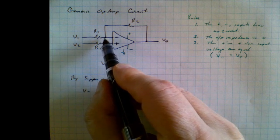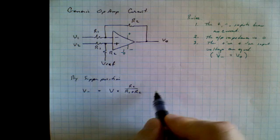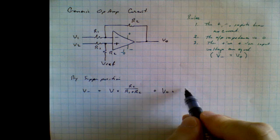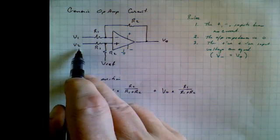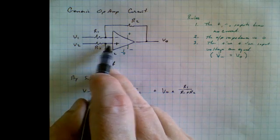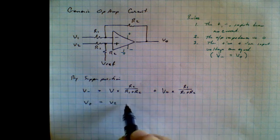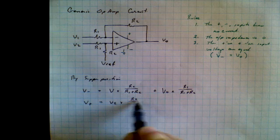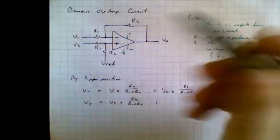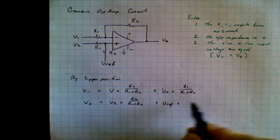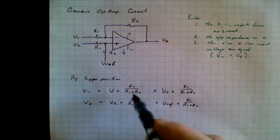But of course there is a contribution to the voltage at this point from this source. So now we'll put this source to the ground, V1, and we'll look at the contribution from VO. Plus VO times, and this time it will be R1 over R1 plus R2. And we'll do the same thing over here. We'll find the voltage at the non-inverting input, the contribution from V2. So that will be V2 times R2 over R1 plus R2 plus contribution from Vref. And then V2 goes to zero. So Vref times R1 over R1 plus R2.